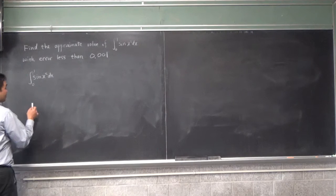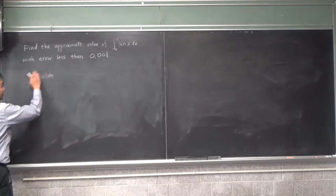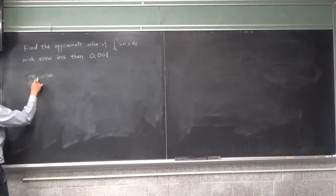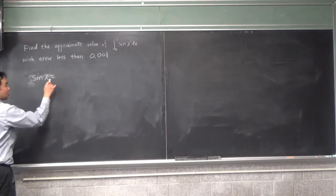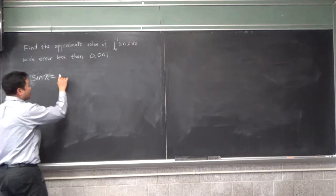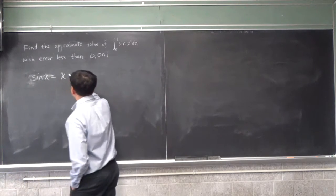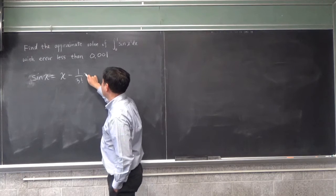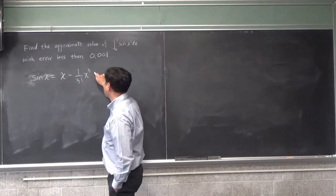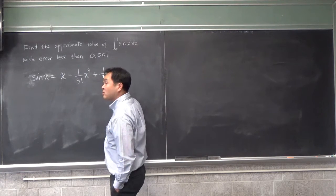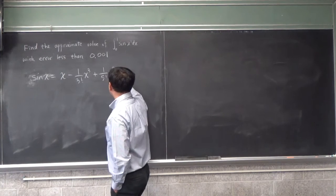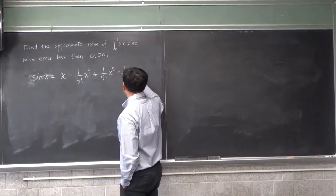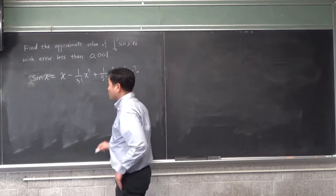So what we do is we start out by the series for sine. What's the Maclaurin series for sine? x minus 1 over 3 factorial x³ plus 1 over 5 factorial x⁵ minus 1 over 7 factorial x⁷, and so on.